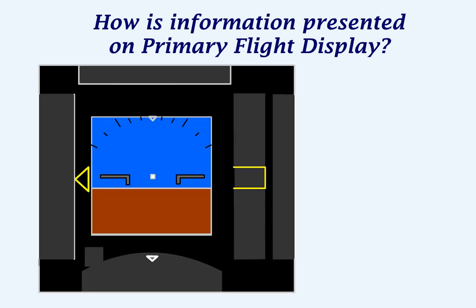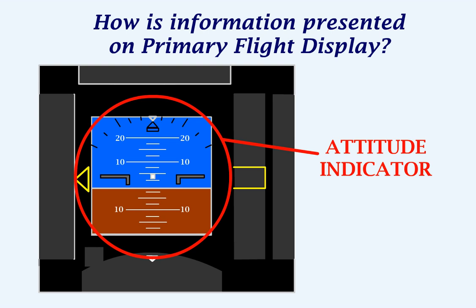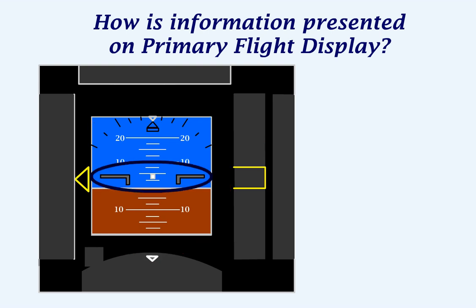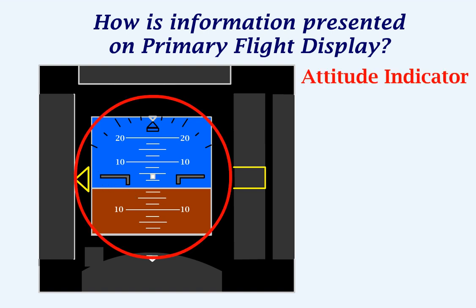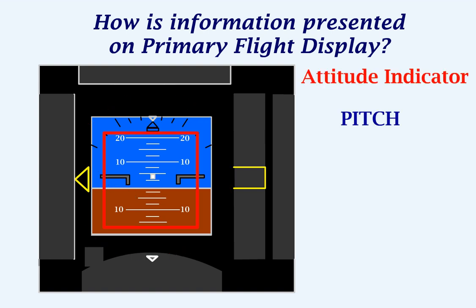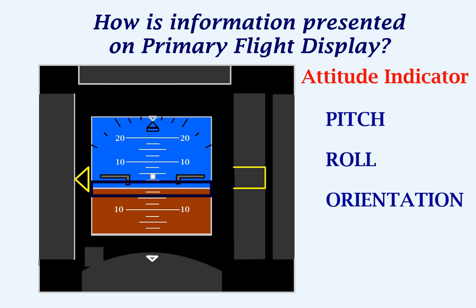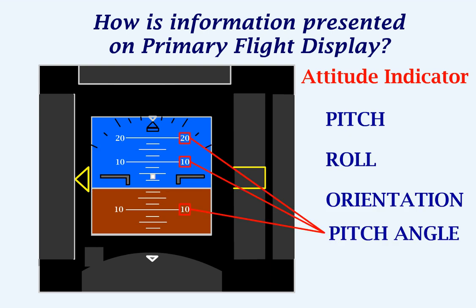Let's see how information is presented on the PFD. At the center of the PFD we have the attitude indicator. These symbols represent the aircraft. The attitude indicator gives information regarding pitch, roll, and orientation of the aircraft. These numbers represent the angle of pitch of the aircraft.